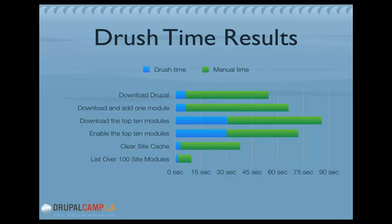Note that the second and third lines don't include the timing for enabling the module or configuring it, nor does the Drupal download time include installation, which would add much more time. Drush has a command to handle installation in only a few seconds, versus what would normally take a minute or two. Together — downloading Drupal and one module using Drush — took maybe only a total of about 10 or 15 seconds. And adding even just the top 10 modules manually adds another minute or more, but through Drush it was about a 30-second process, most of that being the actual downloading.